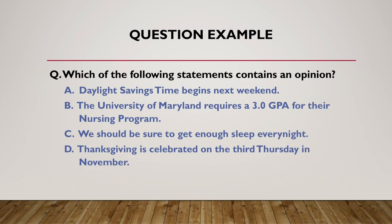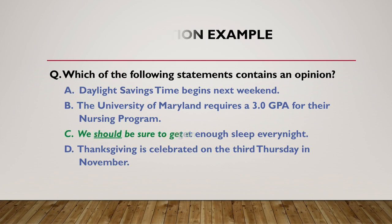Now let's look at another question example. Which of the following statements contains an opinion? A. Daylight savings time begins next weekend. B. The University of Maryland requires a 3.0 GPA for their nursing program. C. We should be sure to get enough sleep every night. D. Thanksgiving is celebrated on the third Thursday in November. The correct answer is C — we should be sure to get enough sleep every night.